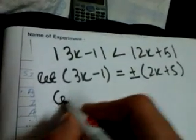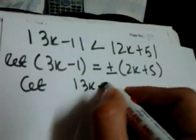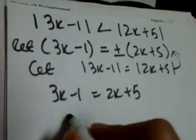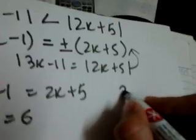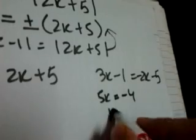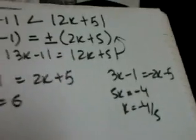So we let |3x - 1| = |2x + 5| for the points of intersection. From 3x - 1 = 2x + 5, we get x = 6. From 3x - 1 = -(2x + 5), we get 5x = -4, so x = -4/5. Therefore the two critical values are x = -4/5 and x = 6.